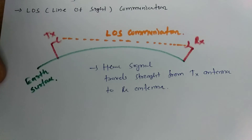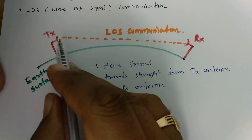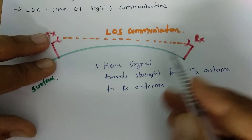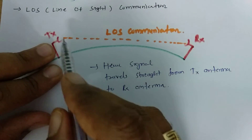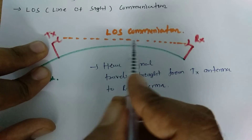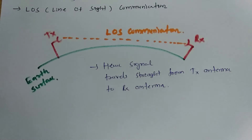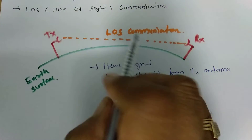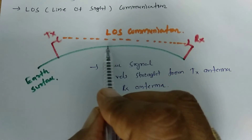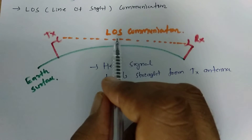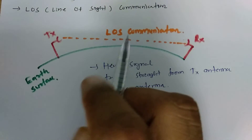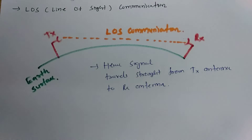Now I will explain the maximum range between the transmitting antenna and the receiving antenna. The maximum range occurs up until the LOS signal just touches the ground. We assume there are no obstacles between the transmitting and receiving antennas, because obstacles would prevent signal propagation. So both antennas must be able to see each other — that is what line of sight means.